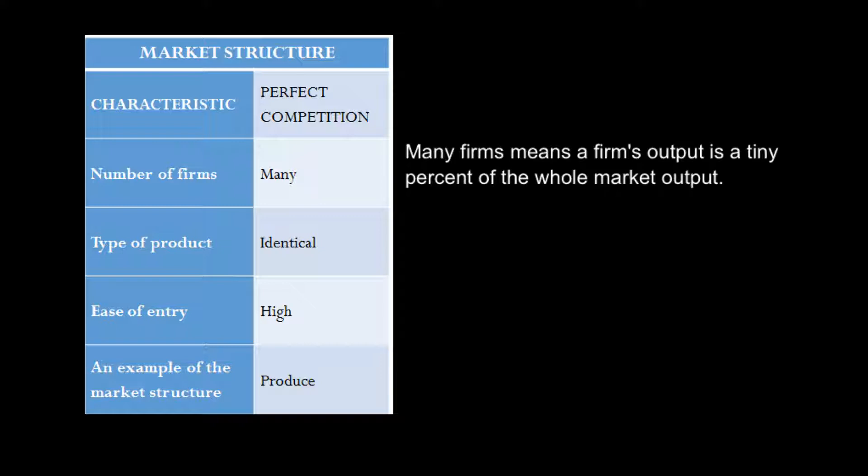Type of product. What do we mean by type of product? We see here the word identical. And what's important about this characteristic is from the point of view of the consumer, they see the product from one firm as being interchangeable with the product of another firm. So they don't really care who they're buying it from.